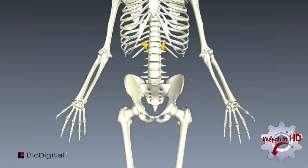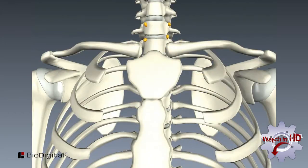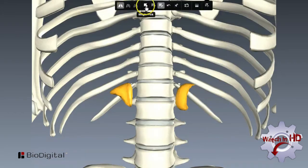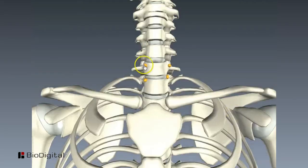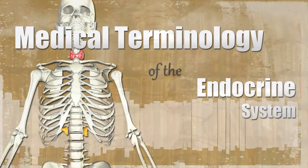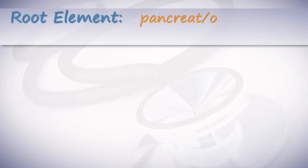The endocrine system is made up of a network of glands. These glands secrete hormones to regulate many bodily functions, including growth and metabolism. In this video, we will cover the medical terminology of the endocrine system — root element: pancreato.